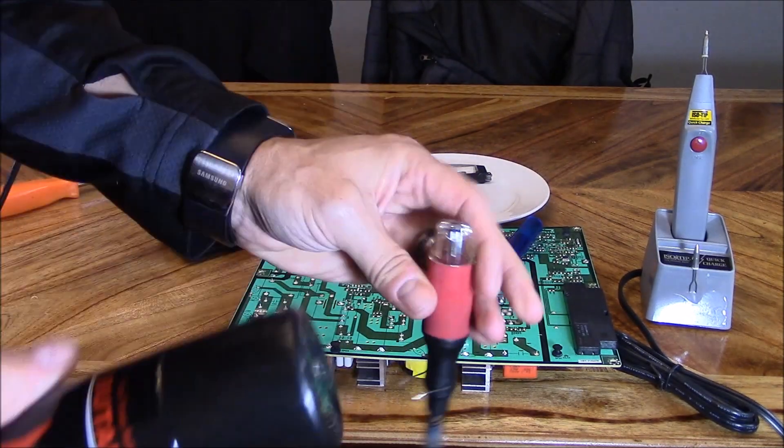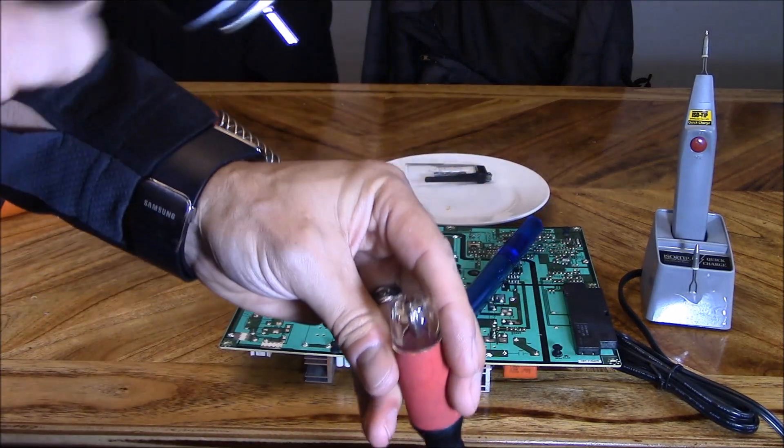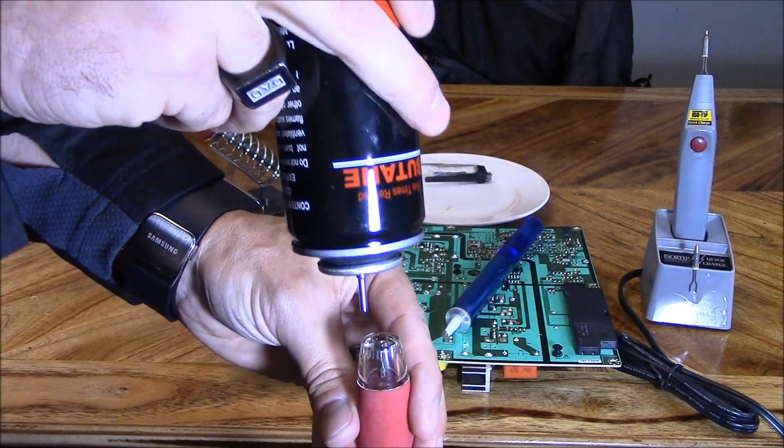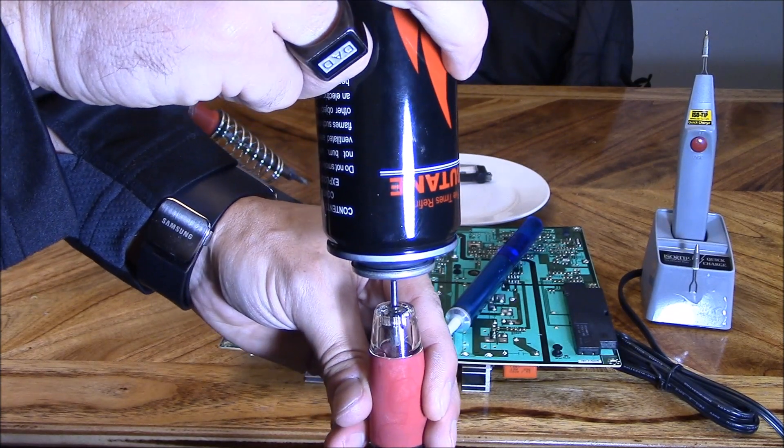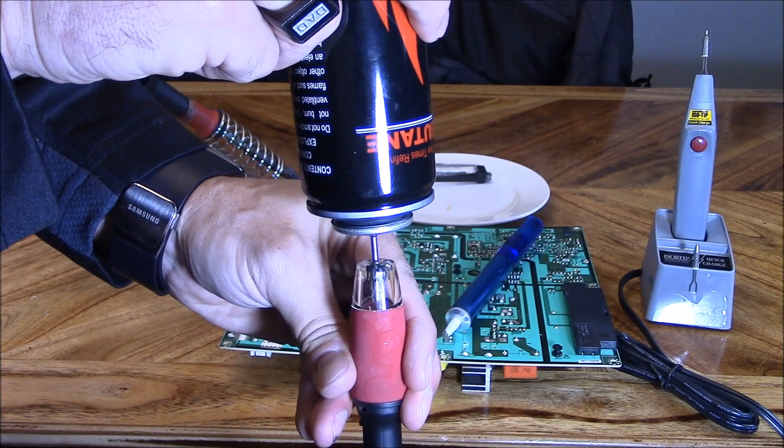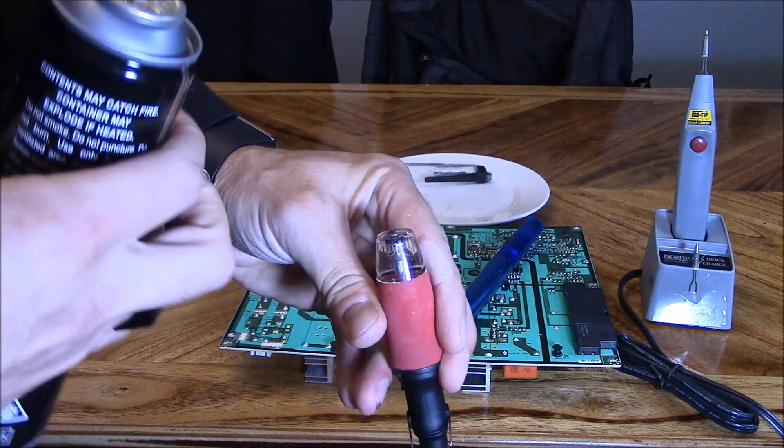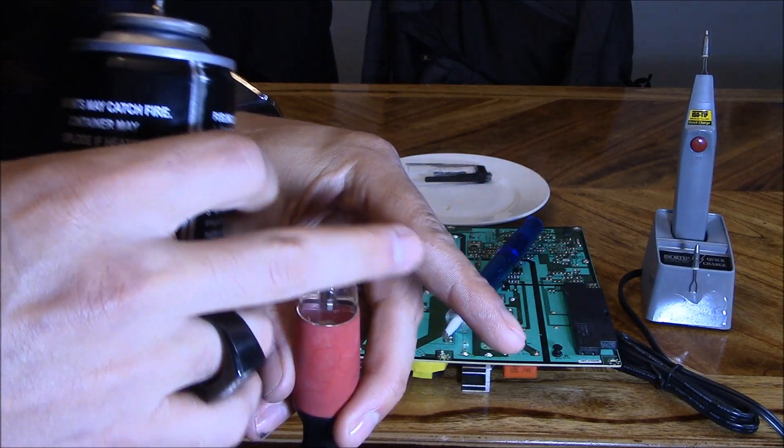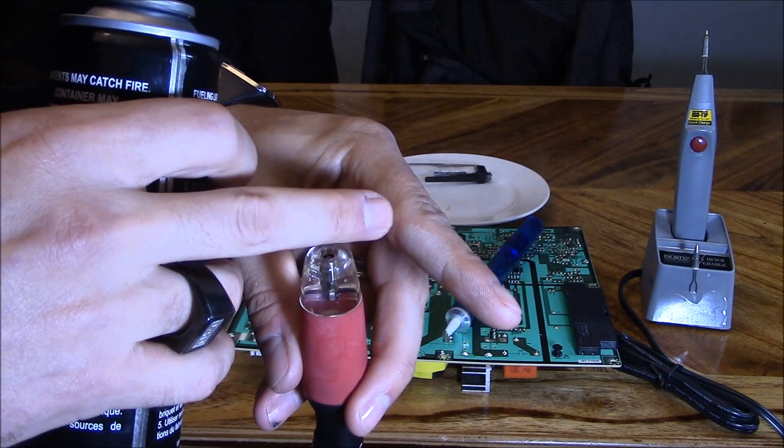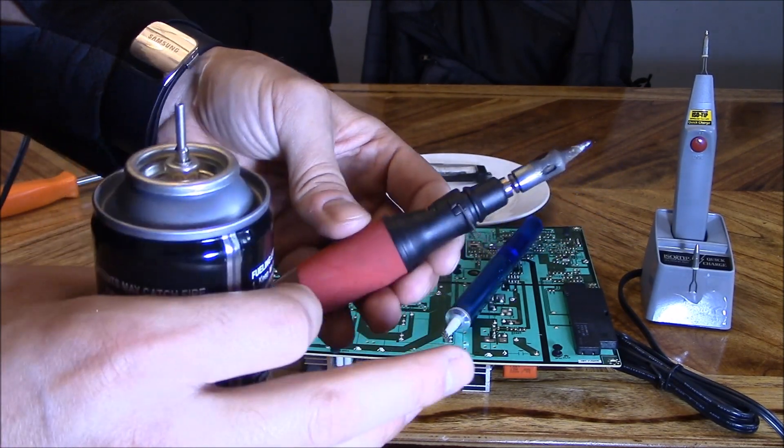To charge it, the only thing you have to do is open this up, tip the butane upside down, and just press down on the can. Hold the soldering iron steady. That's how you fill it up. It does freeze your hand a little bit, and you get a little bit of butane on your skin. You don't want to use the soldering iron near anything that's flammable.